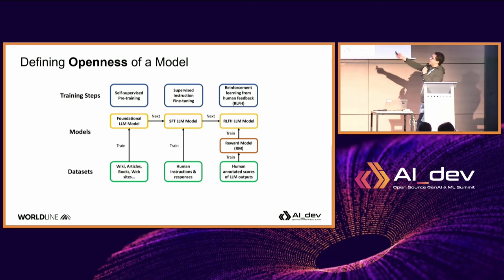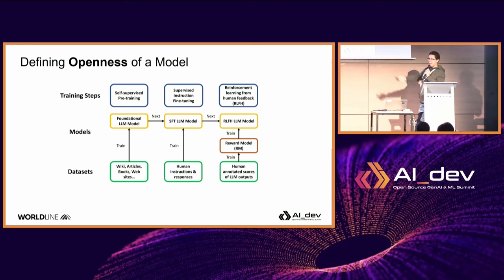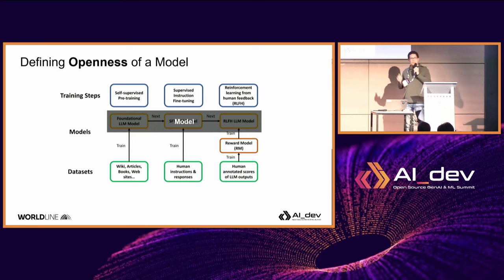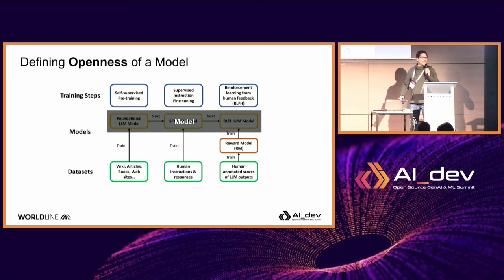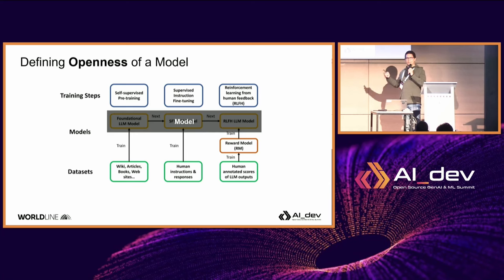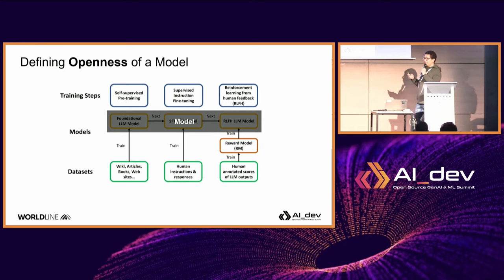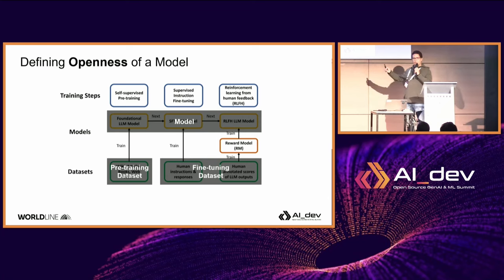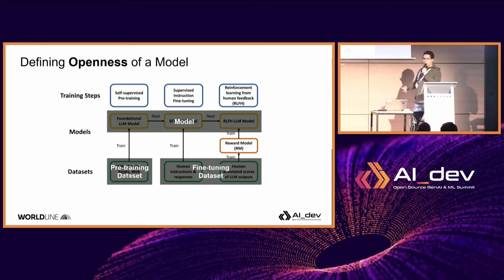I worked with colleagues in R&D labs and asked them: when you try to insert AI — specifically a large language model — into a product or architecture, what should we look at to assess and evaluate the openness of the model, the level of freedom we have when we want to reuse it? Well, that involves basic training steps: foundational model and pre-training, then the fine-tuned model and fine-tuning processing, and when it's reinforced by human feedback — another last stage.